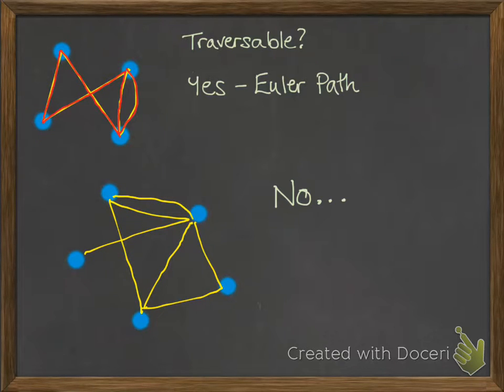He thought about this logically and he said if you start somewhere and you go to another node, when you go to that node, you need to have a route out of it. So every time you go into a node, you need to have somewhere to go to. So on that node, you need to have at least two paths, one going in and one coming out.